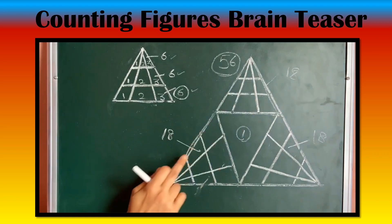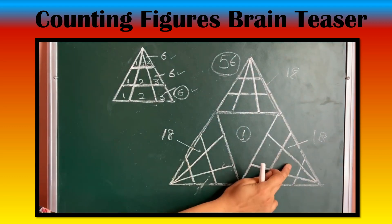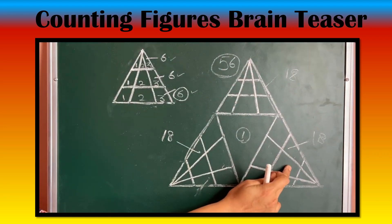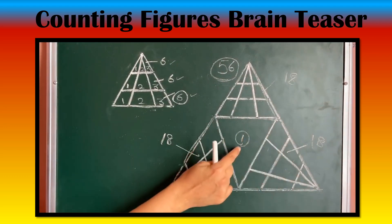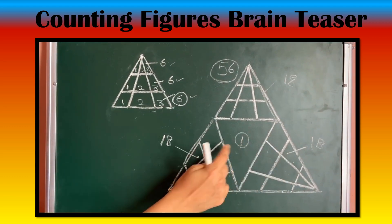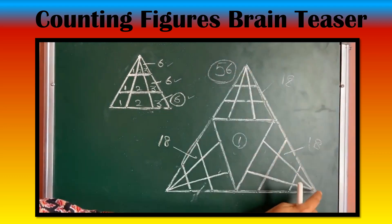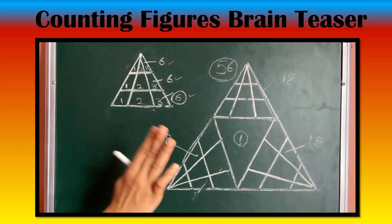Here 18, here 18, here 18 — that's 54 — and the middle one is 55, the whole one is 56.